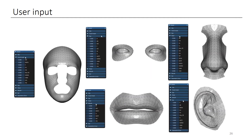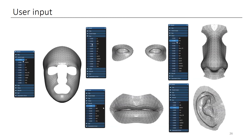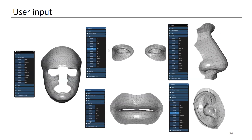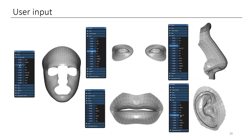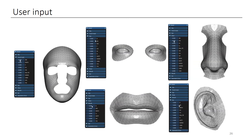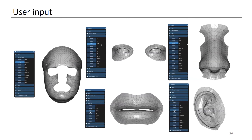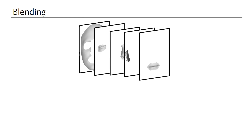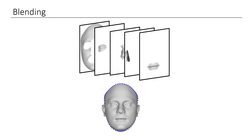Our approach allows the user to edit faces by adjusting facial parts using sliders controlling the values of anthropometric measurements. The measurements are mapped to eigenvector weights, allowing us to compute the individual parts matching the values selected by the user. The last step generates the desired 3D face by seamlessly blending the reconstructed parts together. We conduct a reconstruction based on the Laplacian of each part with blended Laplacians at the junction between parts, with boundary constraints highlighted in blue.